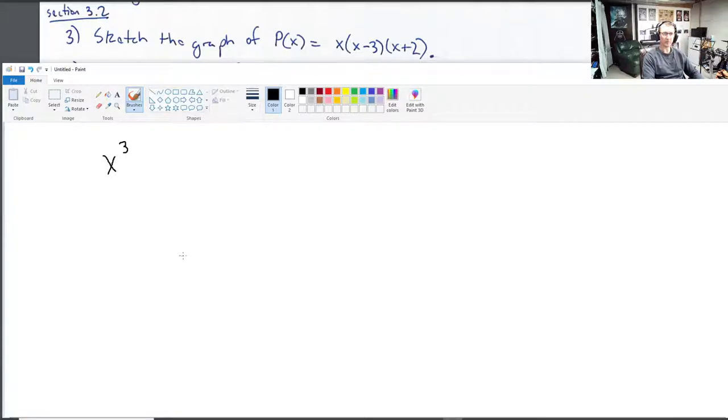So this polynomial has a positive leading coefficient of 1. It has an odd degree of 3. Those two things tell me that the graph has some shape that looks like this. It might or might not have a wiggle in the middle.